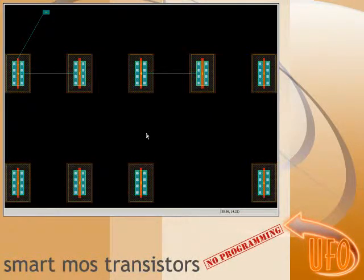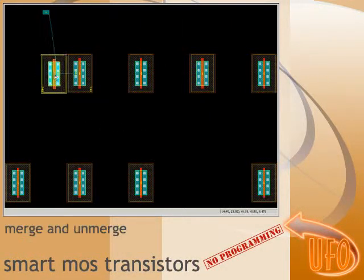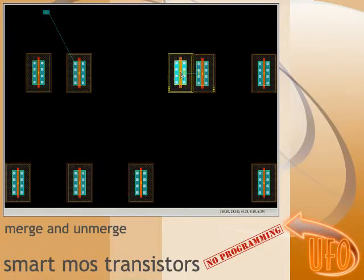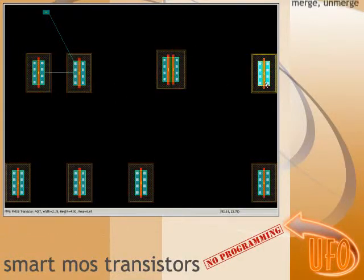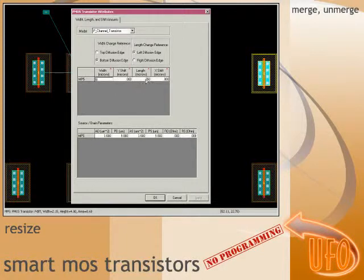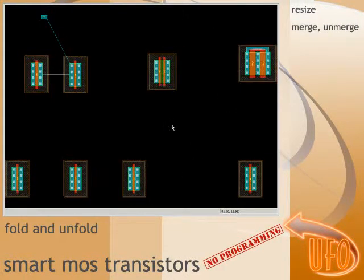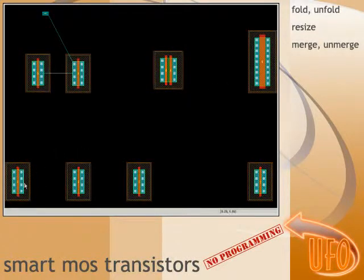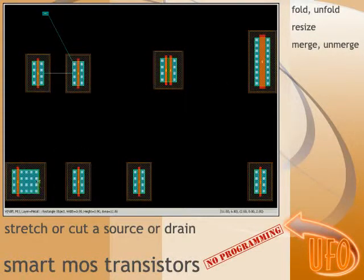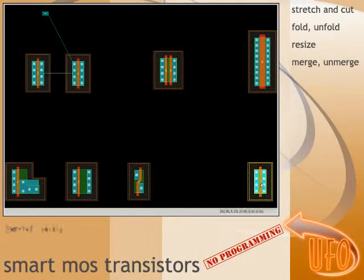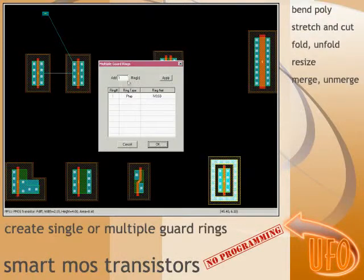UFO's smart MOS transistors allow you to merge and unmerge, resize, fold and unfold, stretch or cut a source or drain, bend a poly gate, and create single or multiple guard rings.